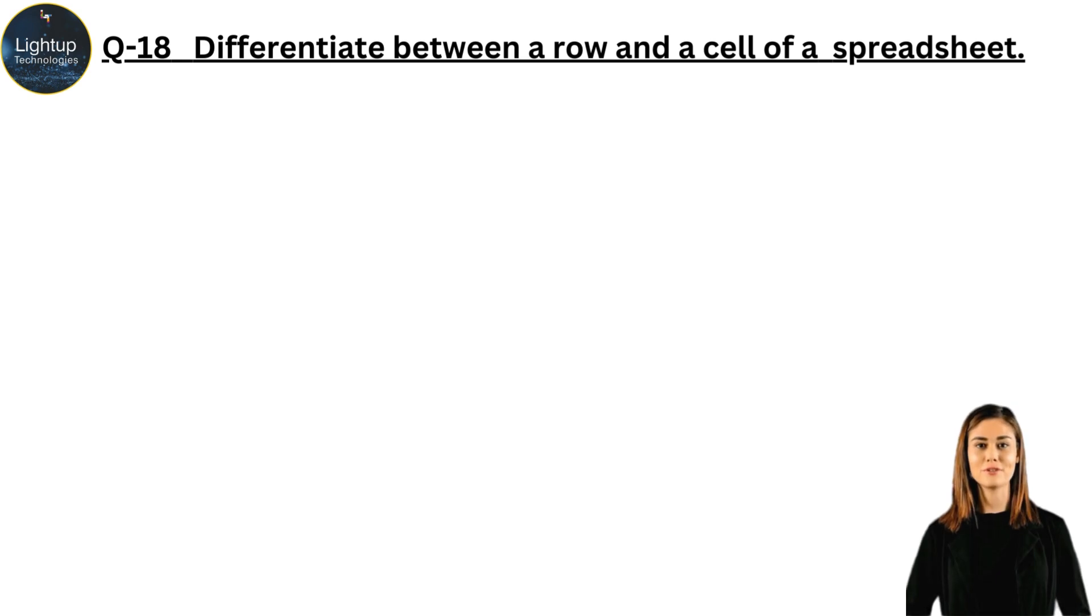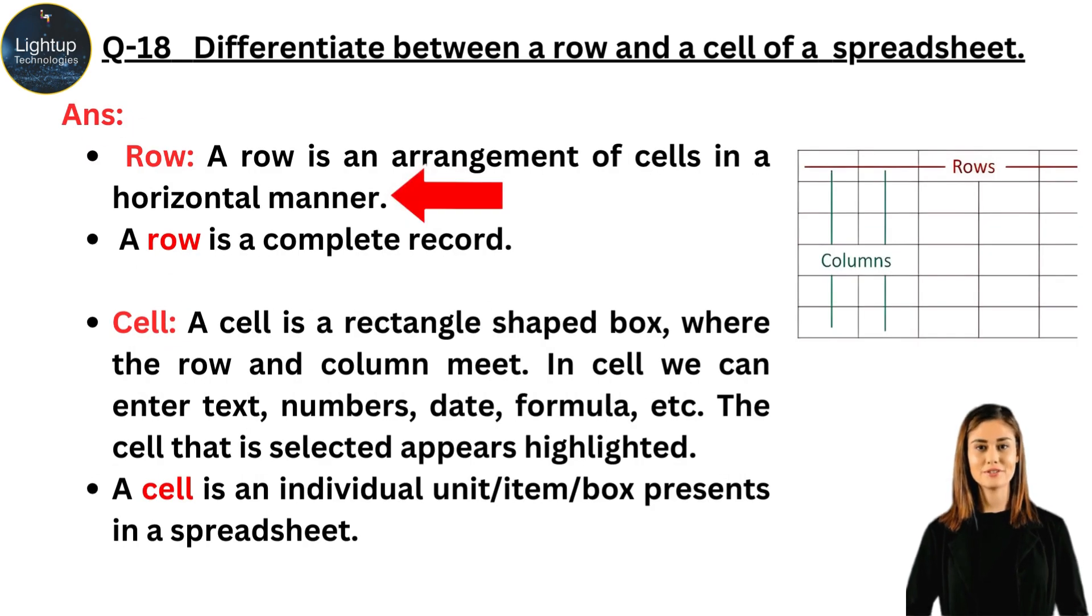Differentiate between a row and a cell of a spreadsheet. Row: a row is an arrangement of cells in a horizontal manner. A row is a complete record. Cell: a cell is a rectangle-shaped box where the row and column meet. In cell we can enter text, numbers, date, formula, etc. The cell that is selected appears highlighted. A cell is an individual unit item box present in a spreadsheet.